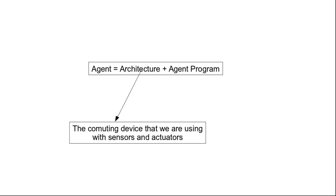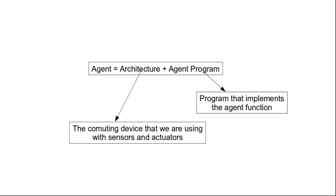An agent is the combination of our architecture and the agent program. The architecture is the hardware part — the computing device we are using to build our agent, along with sensors and actuators. For example, in a simple case it may be a Raspberry Pi board with sensors and actuators. The hardware along with the software — the agent program — gives us the agent. The agent program implements the agent function.